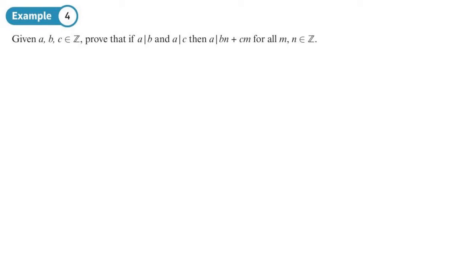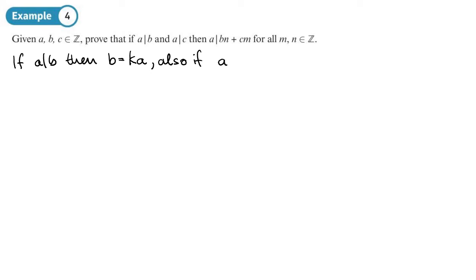Given that a, b and c are integers, prove that if a divides b and a divides c, then a divides mb + nc for any integers m and n. This was stated as fact earlier, so now we need to prove it. We start with the definitions: if a divides b, then b = k×a; if a divides c, then c = l×a, where k and l are integers.